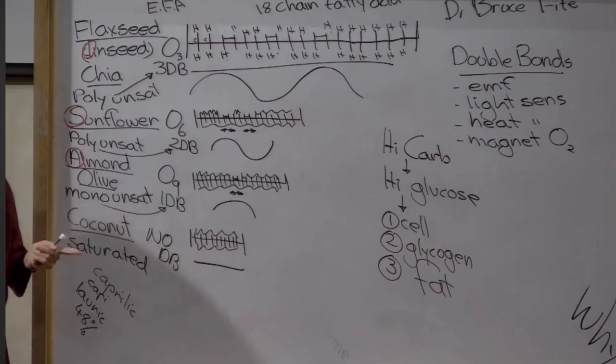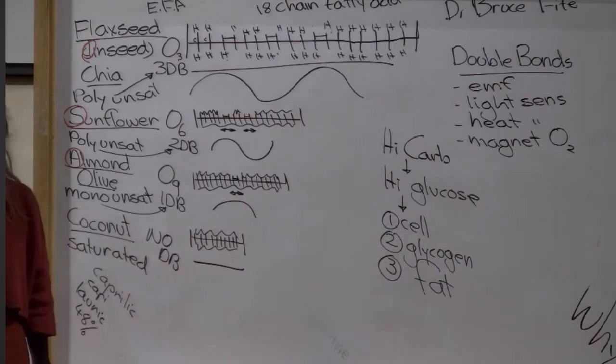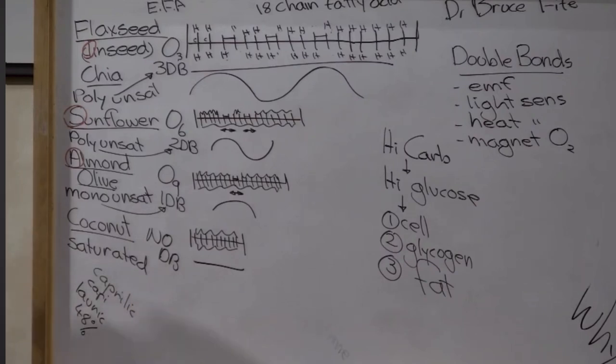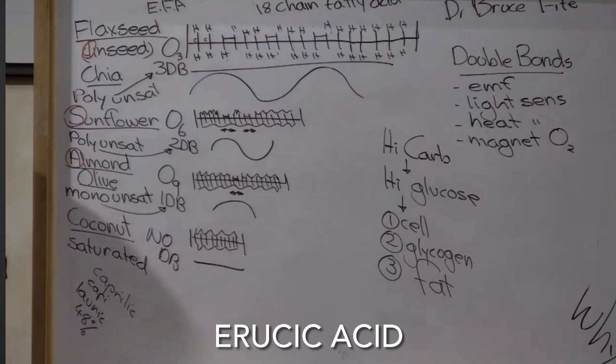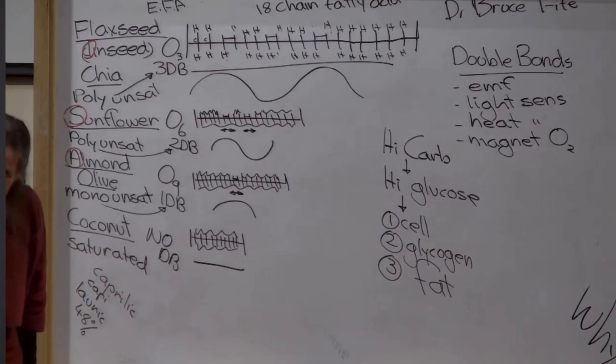The problem with earth balance is it's got canola oil in it. We should all be contacting earth balance and saying, please, can you make one without canola oil? What's the problem with canola oil? It's a very cheap oil, but it's high in a fatty acid called uracic acid, which is toxic to humans. So they've genetically modified the canola oil to lower the uracic acid levels.